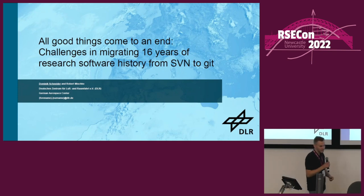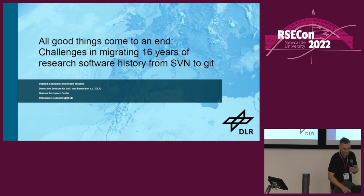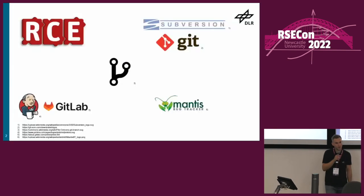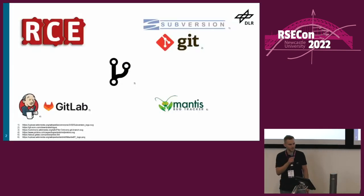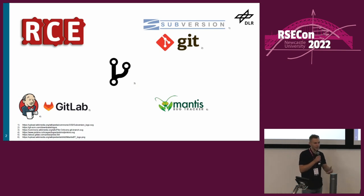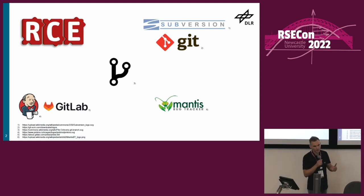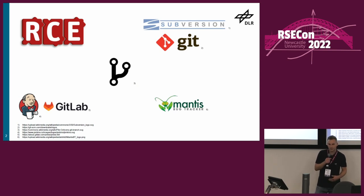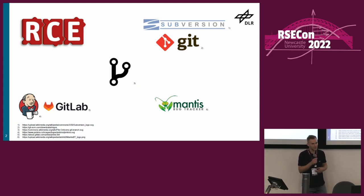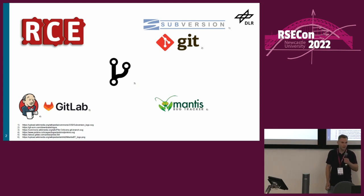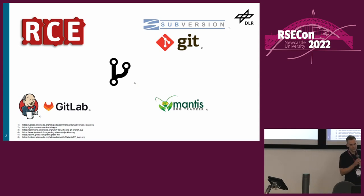I'm a software developer. At first, I'm going to talk about the software we are developing at DLR and whose repository we're looking at. Afterwards, I'll dive into the technical details about the migration from Subversion to Git, then talk about branching models we're using to integrate Git in our daily workflow, and finally how we migrated our Jenkins CI to GitLab CI and our Mantis bug tracker to GitLab issues.